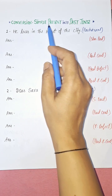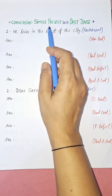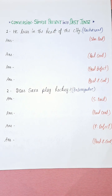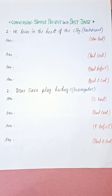So first we'll talk about what simple present tense actually is. Simple present tense is a tense which describes habits, daily routine, unchanging situations, general truth, universal truth, feelings, historical facts, etc. For example, 'the sun rises in the east' — that's a universal truth.